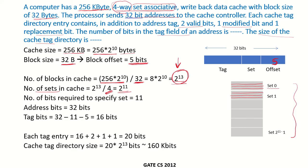To specify a particular set in the cache, since there are 2 to the power of 11 sets, we will require 11 bits. The total number of address bits are 32. So 32 minus the 11 bits required to specify the set, minus the 5 bits required to specify the offset, leaves us with 16 bits. So there will be 16 bits in the tag field, and each block's associated tag will have 16 bits.